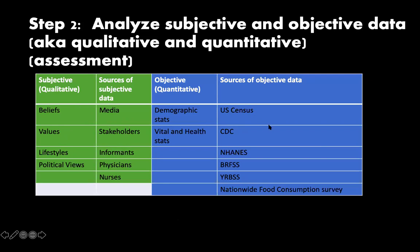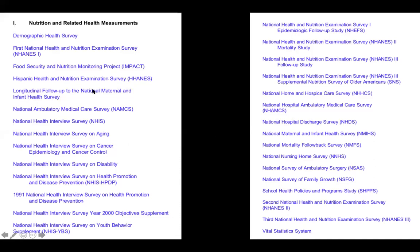As you get into the literature review, you might pull information from NHANES about U.S. food insecurity numbers. The Behavioral Risk Factor Survey and the Youth Risk Behavior Survey could also be useful, as well as the Nationwide Food Consumption Survey. These are all different surveys that are out there — most of them are specific to age groups, and you can find things like older Americans data and maternal and infant health surveys.